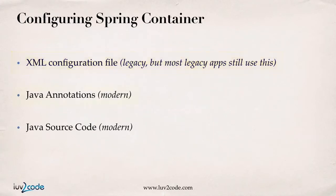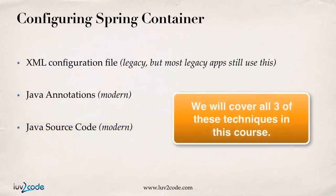So we'll start off with that. Java annotations are kind of the latest fashion. And you can also get rid of all config files and configure the container using Java source code. But again, we're going to cover all of these techniques so you'll understand how each one works for your application.